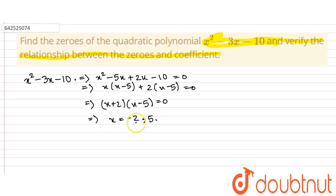So these are the zeros. Now for the sum of zeros, sum of zeros equals 5 plus minus 2, that is 3, and that is equal to minus